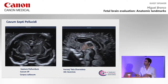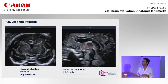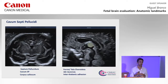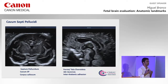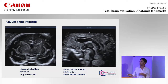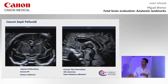It's very interesting to note this. This is the interthalamic adhesion, which is one important landmark on the morphology of the third ventricle. We are also able to identify here the optic chiasma and the sylvian fissure.